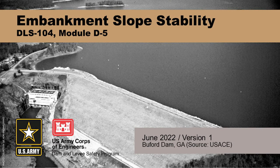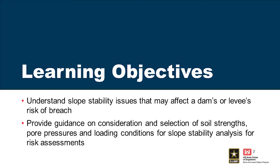Embankment slope stability is pretty complicated. It requires consideration of the full plausible range of soil behavior and the likelihood of different types of behavior, which may occur as a result of the type of loading we expect — the rate of loading and the level of loading. The objectives of this module are to talk about slope stability issues that may affect the risk of breach, and to provide guidance on the consideration of factors that go into an analysis: selection of soil strengths, pore water pressures, and loading considerations for a slope stability analysis for a risk assessment.